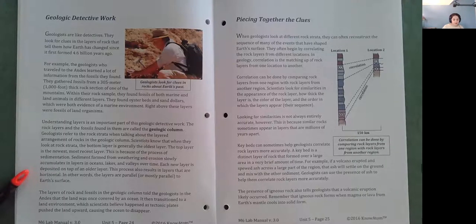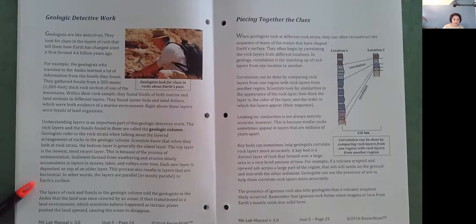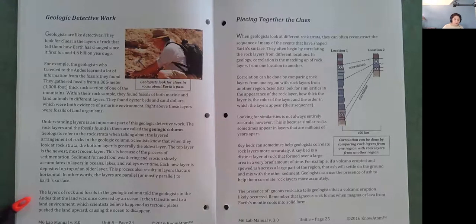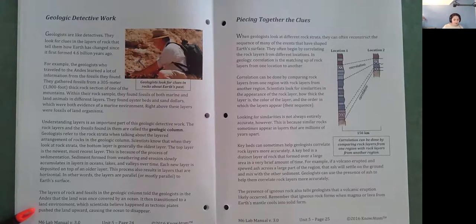Each new layer is deposited on top of an older layer. This process also results in layers that are horizontal. In other words, the layers are parallel, or mostly parallel, to Earth's surface. The layers of rock and fossils in the geologic column told the geologists in the Andes that the land was once covered by an ocean. It then transitioned to a land environment, which scientists believe happened as tectonic plates pushed the land upward, causing the ocean to disappear.